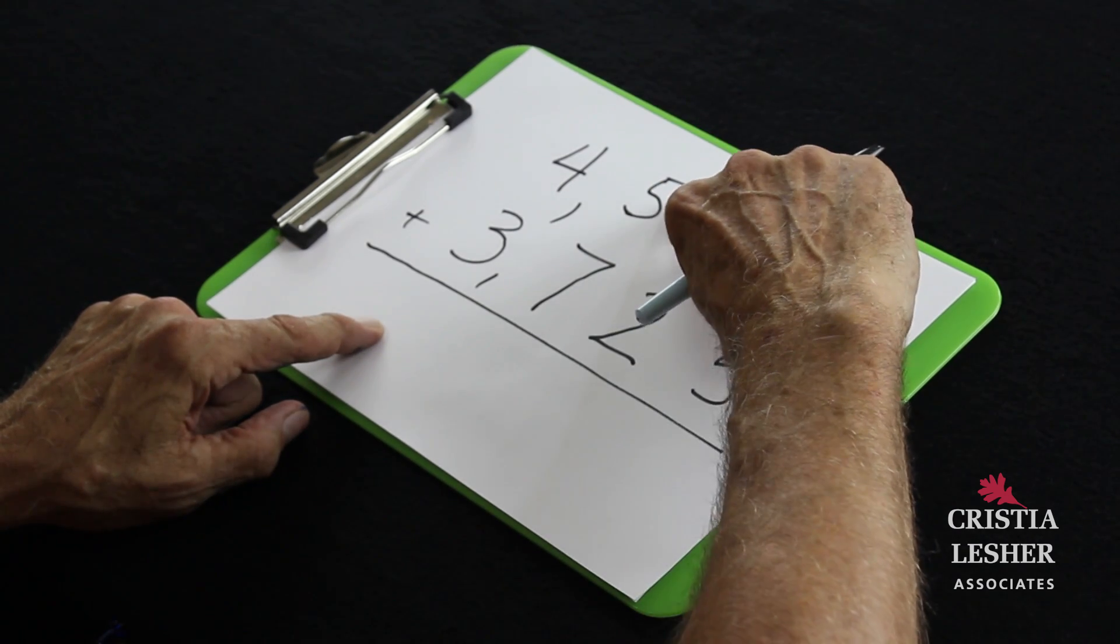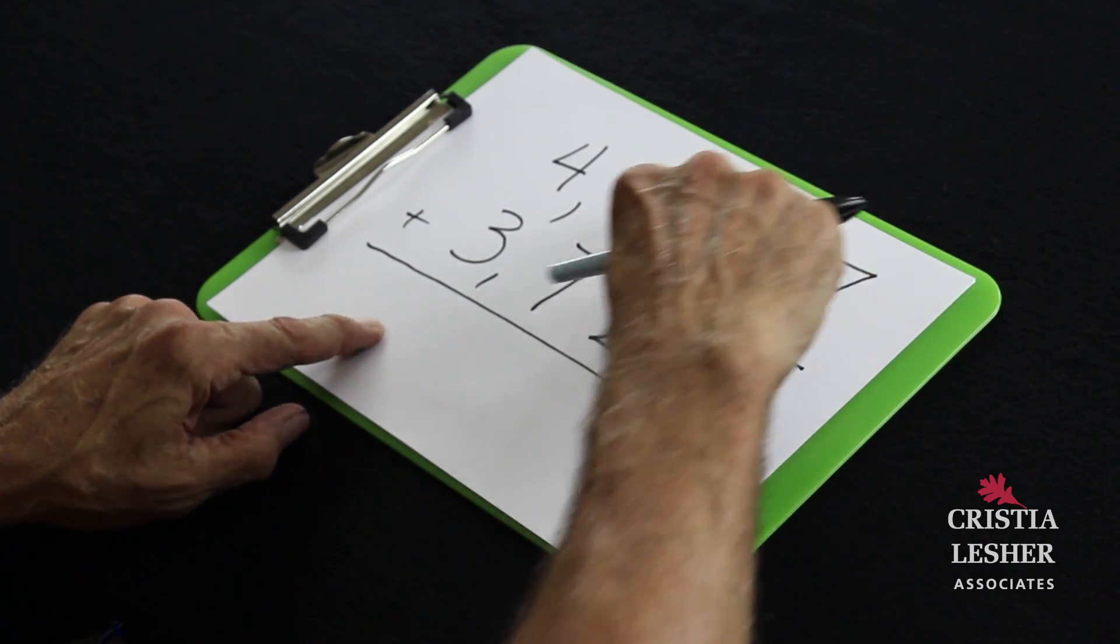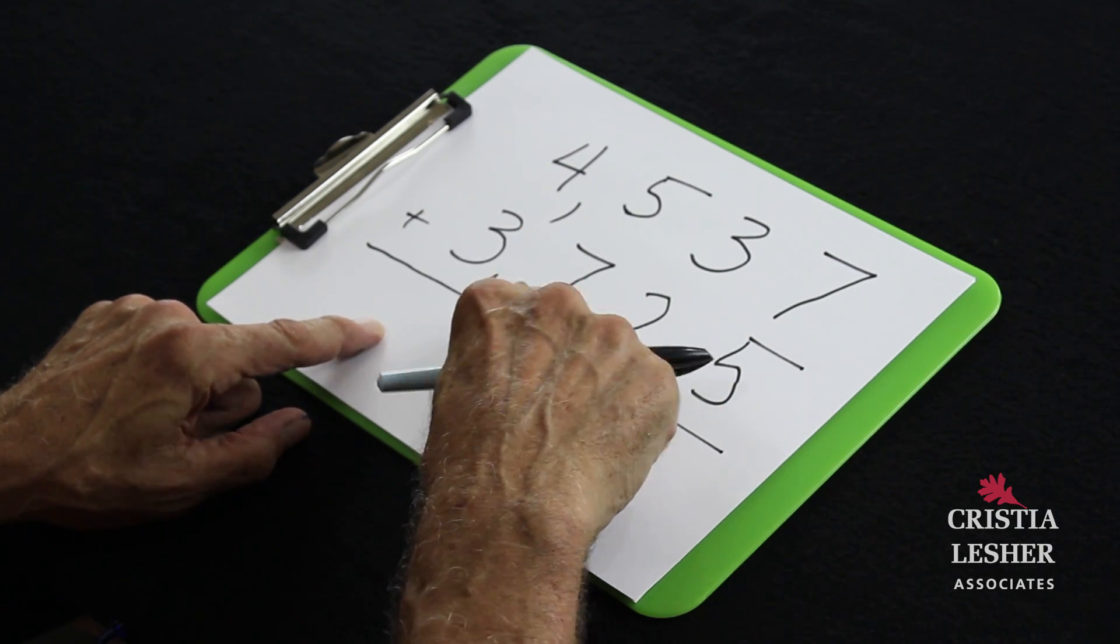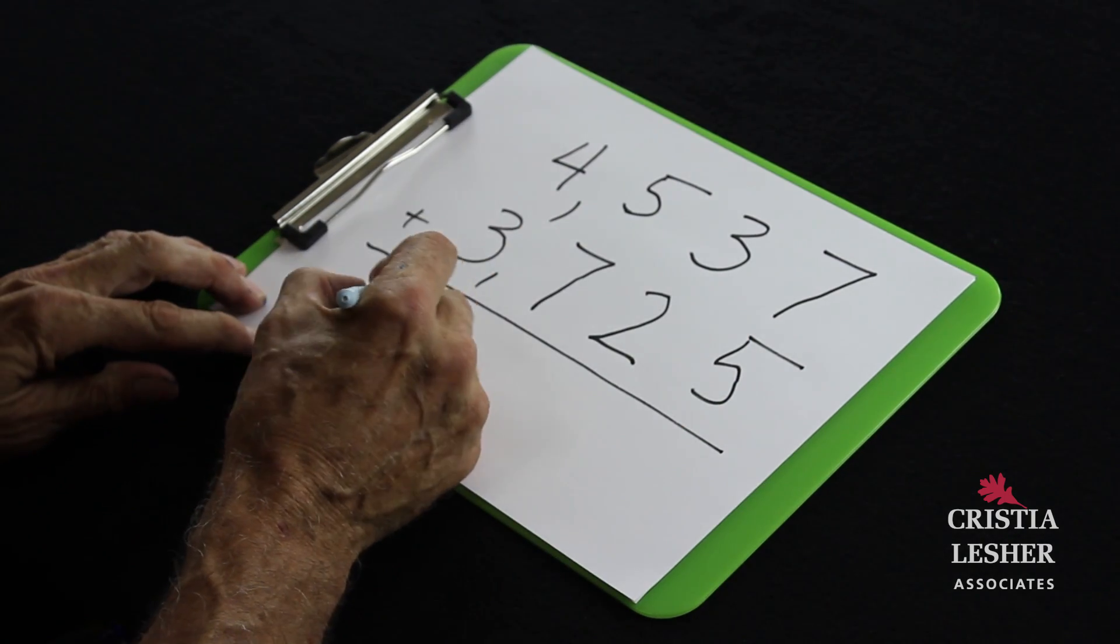I'm going to use 3 of the hundreds from the 500 to put with the 700 to make another 1000, and now I have a total of 8000.